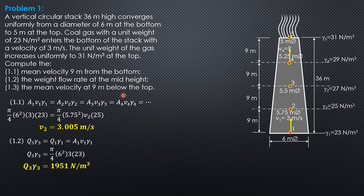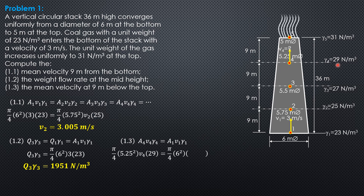Lastly, the mean velocity at 9 meters below the top: the weight flow rate at section 4 equals the weight flow rate at section 1 by continuity. So A4·V4·γ4 = A1·V1·γ1: pi/4 × 5.25² × V4 × 29 = pi/4 × 6² × 3 × 23. Cancelling pi/4 and solving, V4 = 3.108 meters per second. Remember, since the flowing fluid is compressible, we use the continuity equation for compressible fluids.